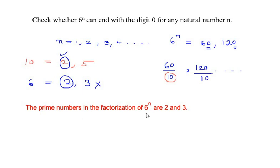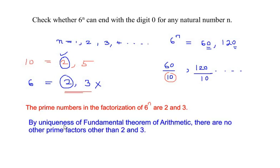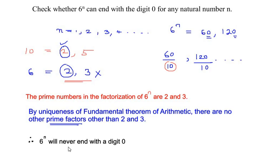So we can write here: the prime numbers in the factorization of 6 to the power of n are 2 and 3. By the uniqueness of the Fundamental Theorem of Arithmetic, there are no other prime factors other than 2 and 3 for 6. They are talking about prime factors only, not composite factors. Therefore, 6 to the power of n will never end with the digit 0, mainly because 5 is missing from the prime factors of 6.